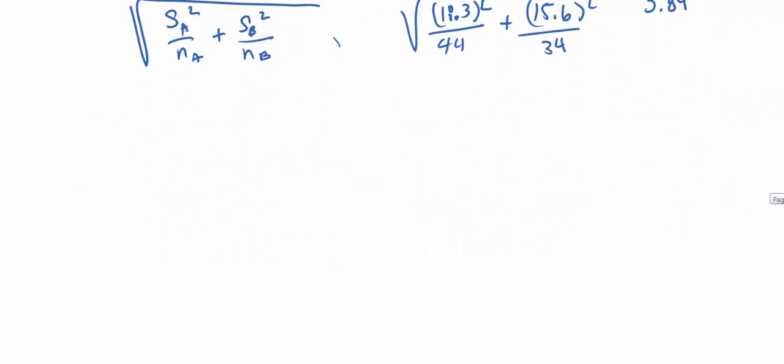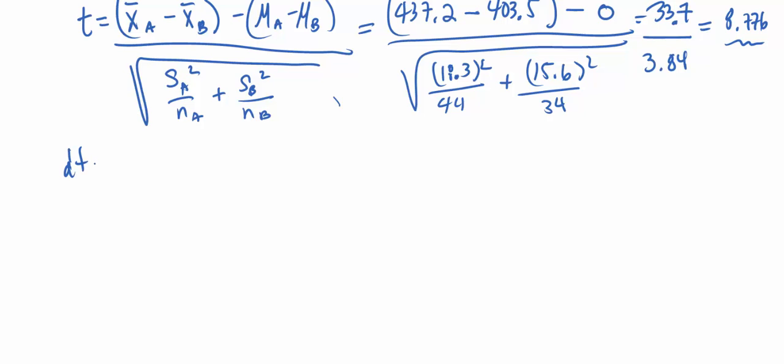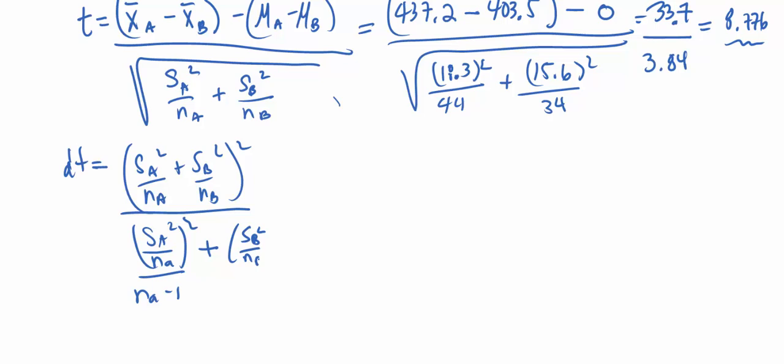Recall the Satterthwaite degrees of freedom is equal to the formula SA squared over NA plus SB squared over NB all of this squared divided by SA squared over NA quantity squared divided by NA minus 1 plus SB squared over NB all squared divided by NB minus 1. So if we plug in our sample standard deviations and our sample sizes, we should get a numerator value of 218.12 and a denominator value of 2.9. This will give us a Satterthwaite degrees of freedom of 75.22.